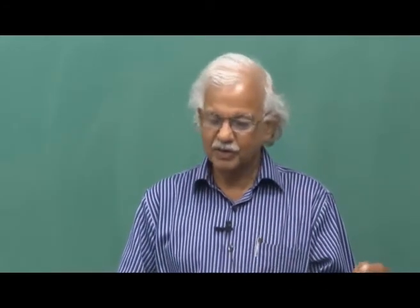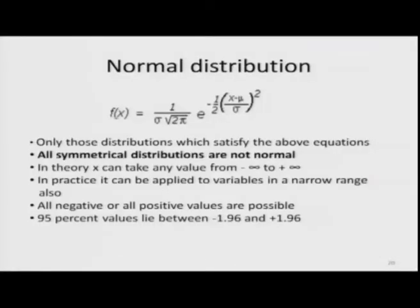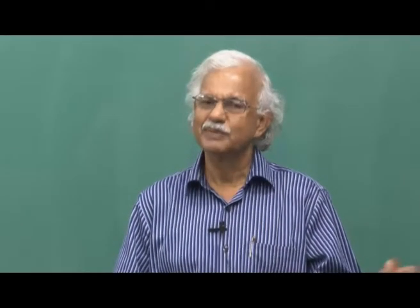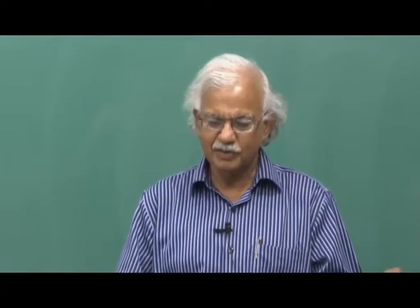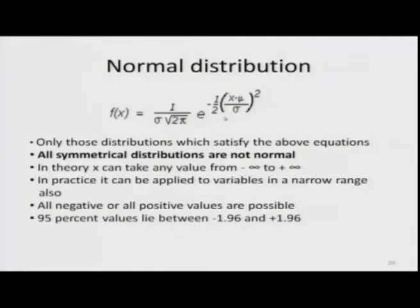Now, concerning the normal distribution — remember that only those distributions which satisfy the normal distribution equation are normal. Many students think all symmetrical distributions are normal; that is not correct. Many symmetrical distributions may be more or less kurtotic than the normal distribution. Only those distributions given exactly by the normal formula are normal. In theory X can take values from minus infinity to plus infinity, but in practice it can be applied to variables in a narrow range as well, because 95% of values lie between −1.96 and +1.96 in the standard normal variate.